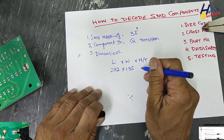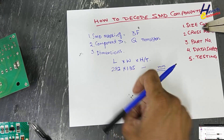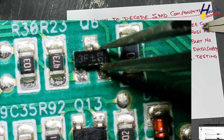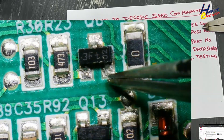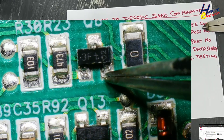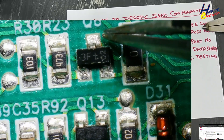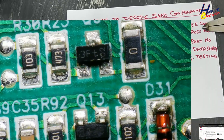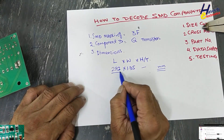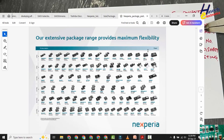We will not measure thickness or height now — these two measurements are sufficient. Some manufacturers use body dimensions, and some use terminal-to-terminal measurements for width. To take terminal-to-terminal measurements, we need to desolder the component, clean it, and remove all excessive solder for exact measurements. We now have 2.9 mm by 1.3 mm.